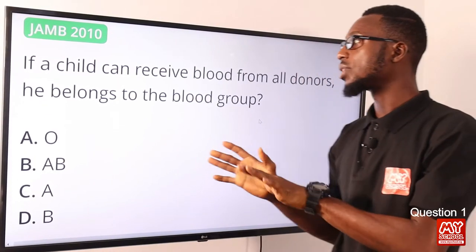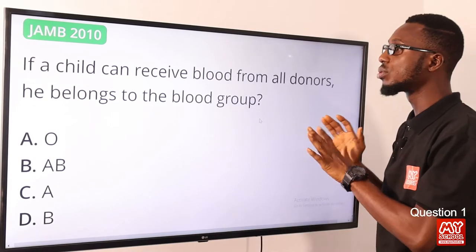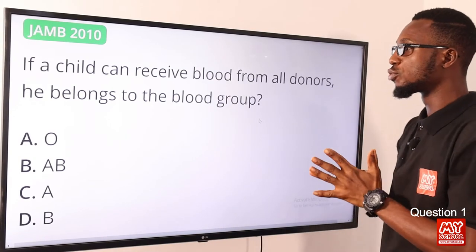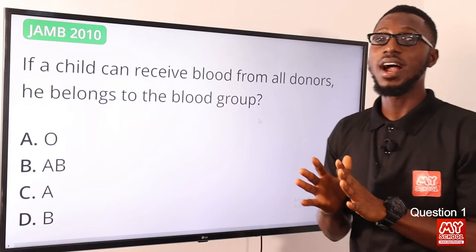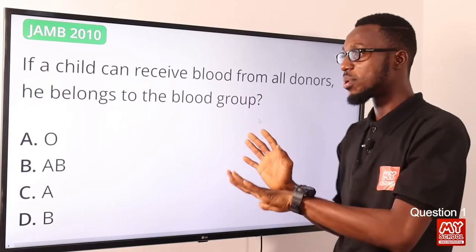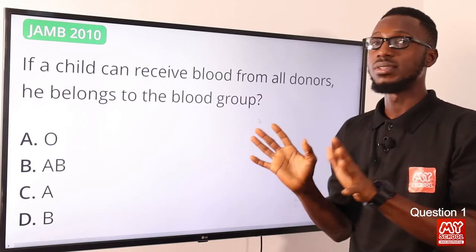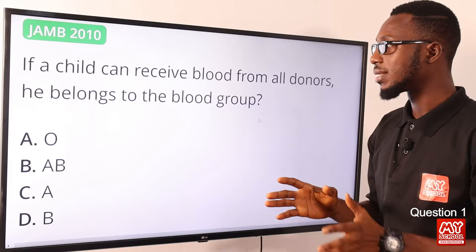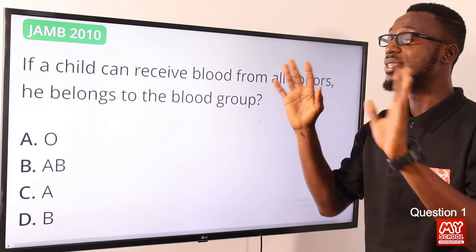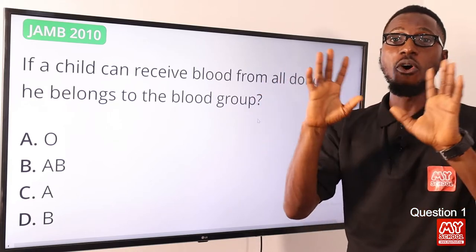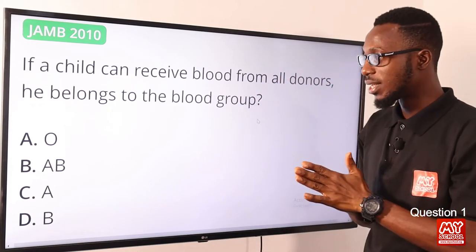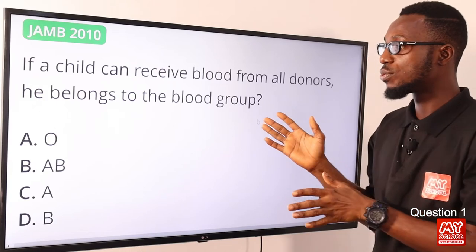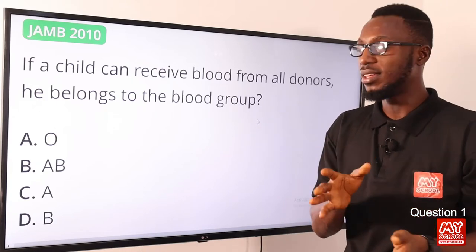If a child can receive blood from all donors, it belongs to which blood group? So we have the universal donors and we have the universal recipients. Those that can receive from all other blood groups are referred to as group AB.